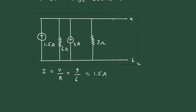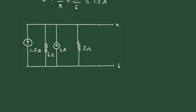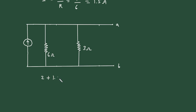Now here we can see this 1.5 ampere and this 2 ampere current sources are connected in parallel, and they also have the same direction, which is upward. So they will get added. Also, this 6 ohm and this 3 ohm are connected in parallel. Solving the current sources: 2 ampere plus 1.5 ampere gives 3.5 ampere.